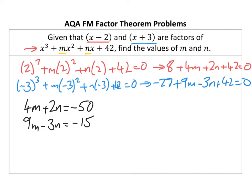I then have two simultaneous equations. I'm going to multiply this one by 3 and this one by 2. So if I multiply that by 3, I should get 12M plus 6N equals negative 150. And I should have 18M minus 6N equals negative 30.